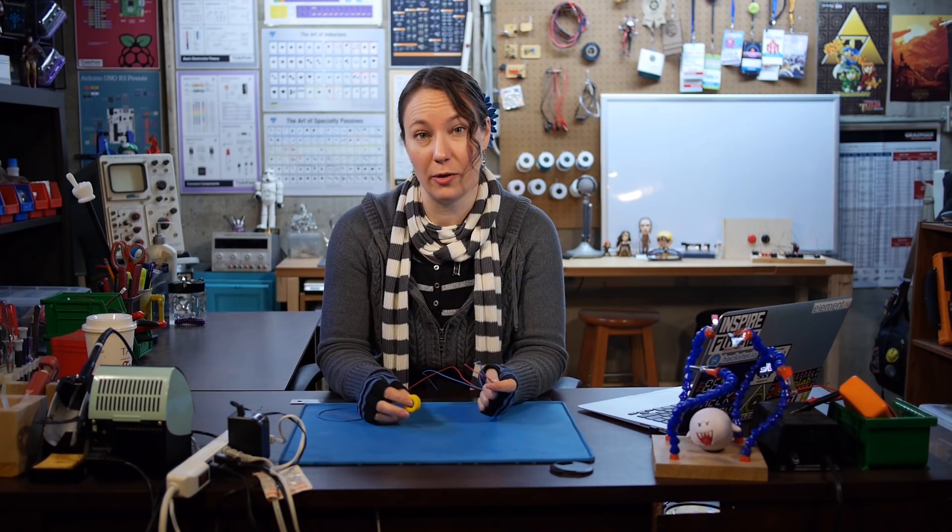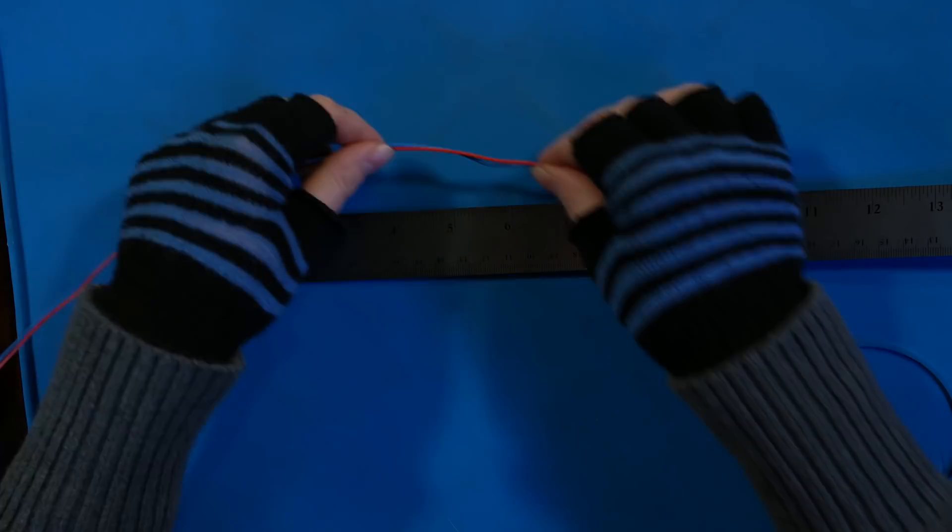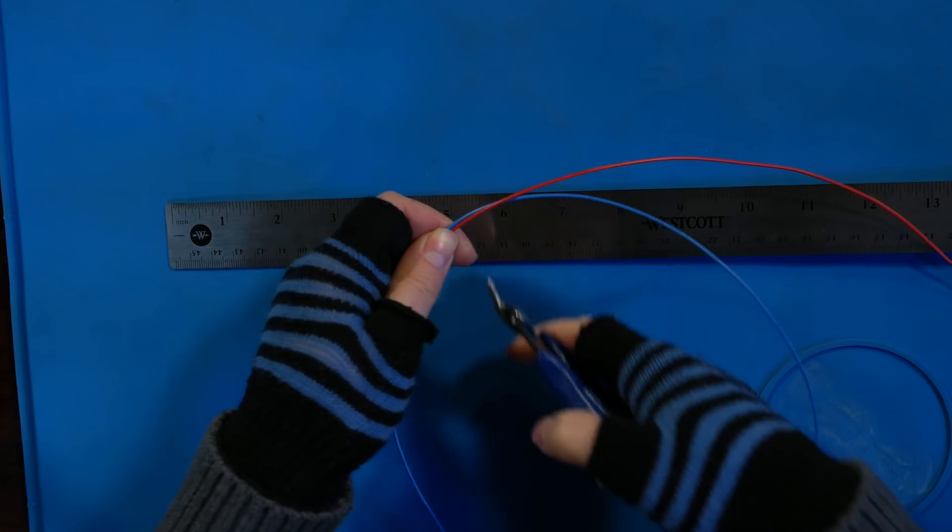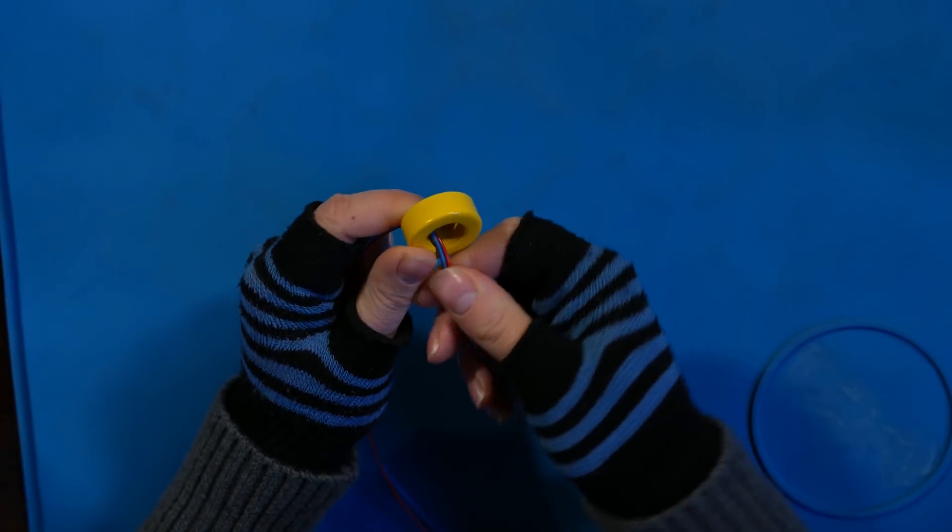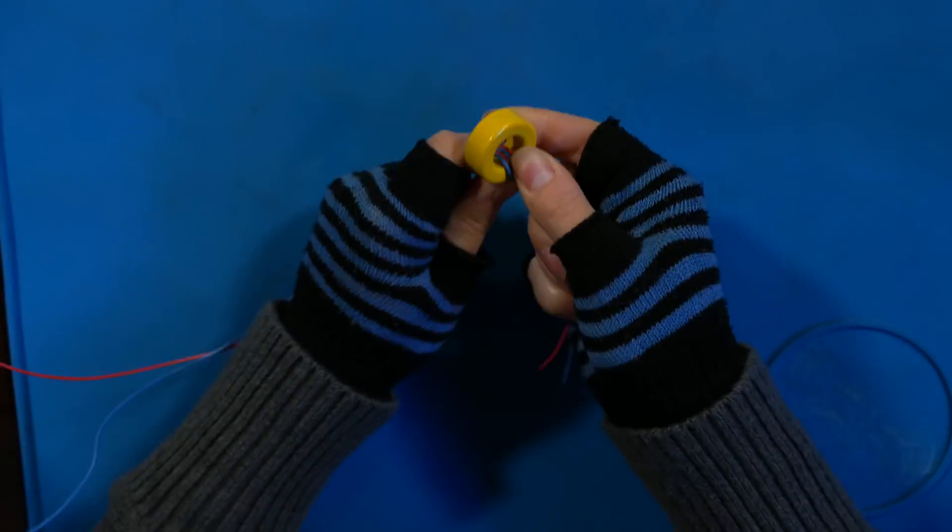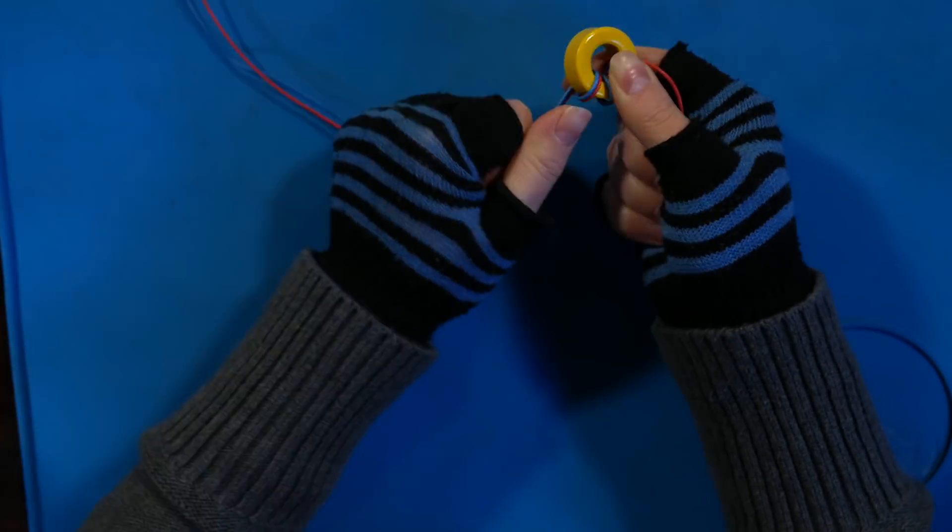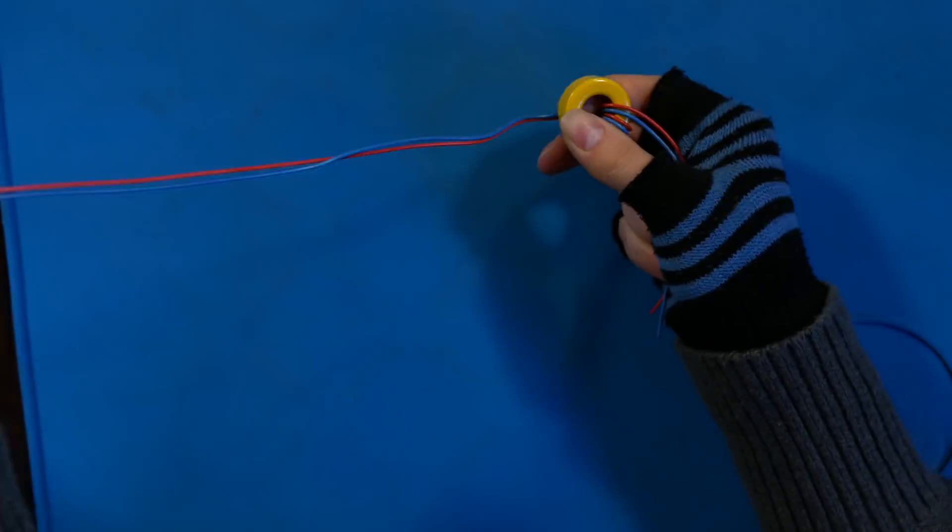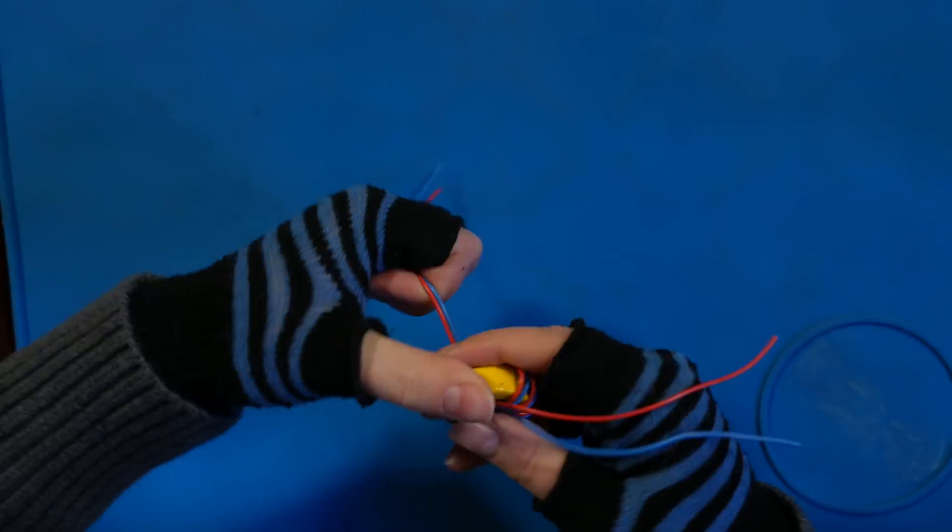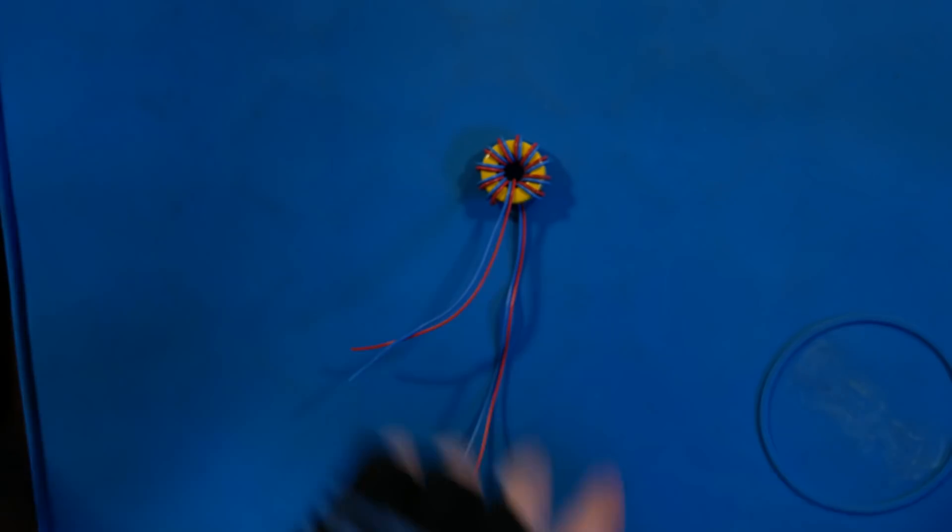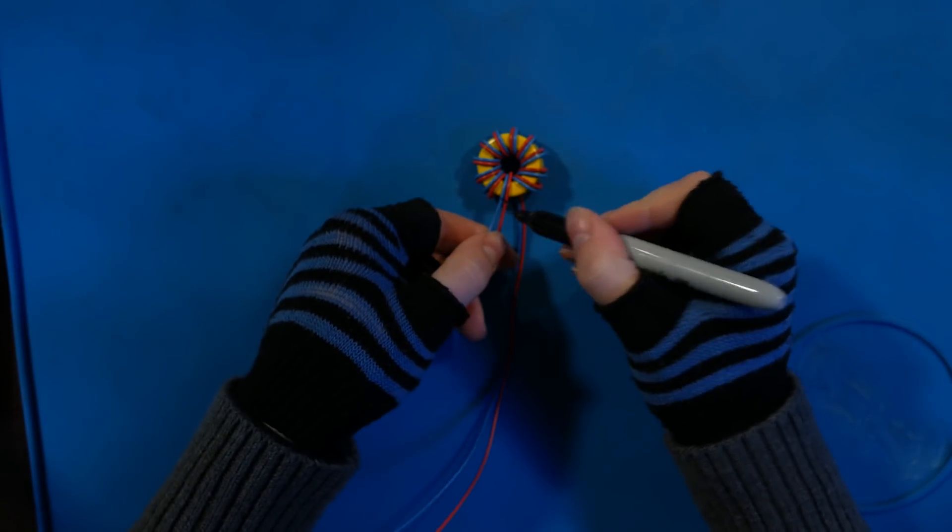To make our transformer, we need to wrap our ferrite ring with two insulated wires. Choose two colors of wire and cut one piece of each two feet long. Thread the wires through your ferrite ring, leaving tails of three to six inches. Wrap the wires ten times around the toroid. Don't let the wires overlap, and try to keep them as evenly spaced as possible. Add tape to hold the wires on if needed. It'll be helpful later if you mark the pairs.